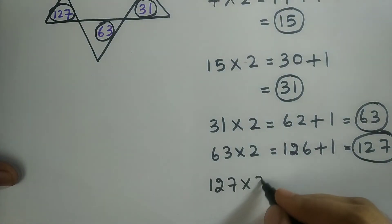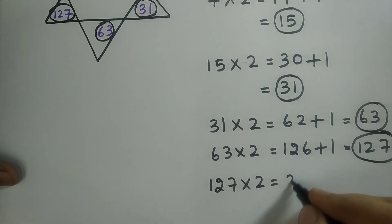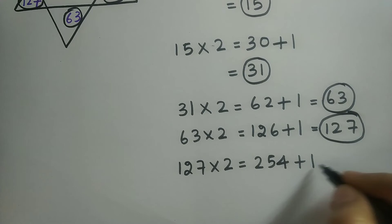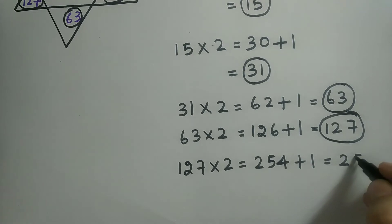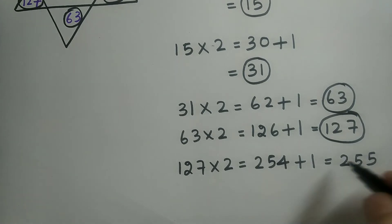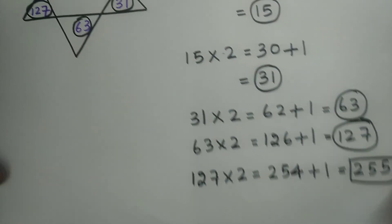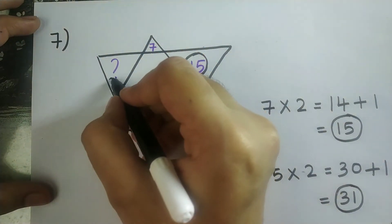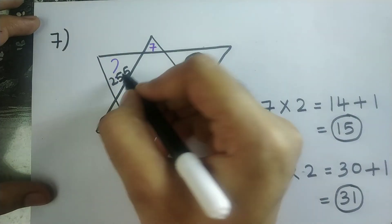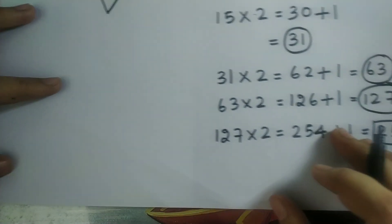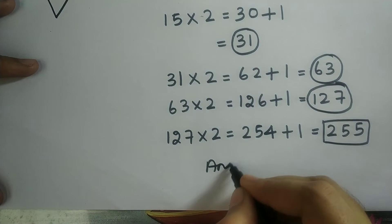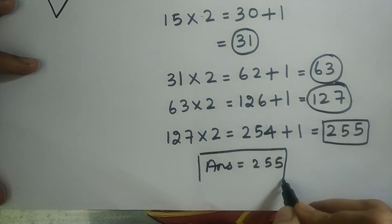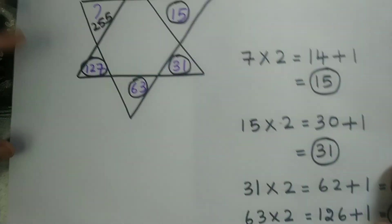I should multiply 127 with 2, I will be getting 254. I should add this with 1, so therefore I will be getting 255. So this is my answer. In the place of question mark, I should write 255. So therefore the answer is equal to 255. This is the logic for this sum.